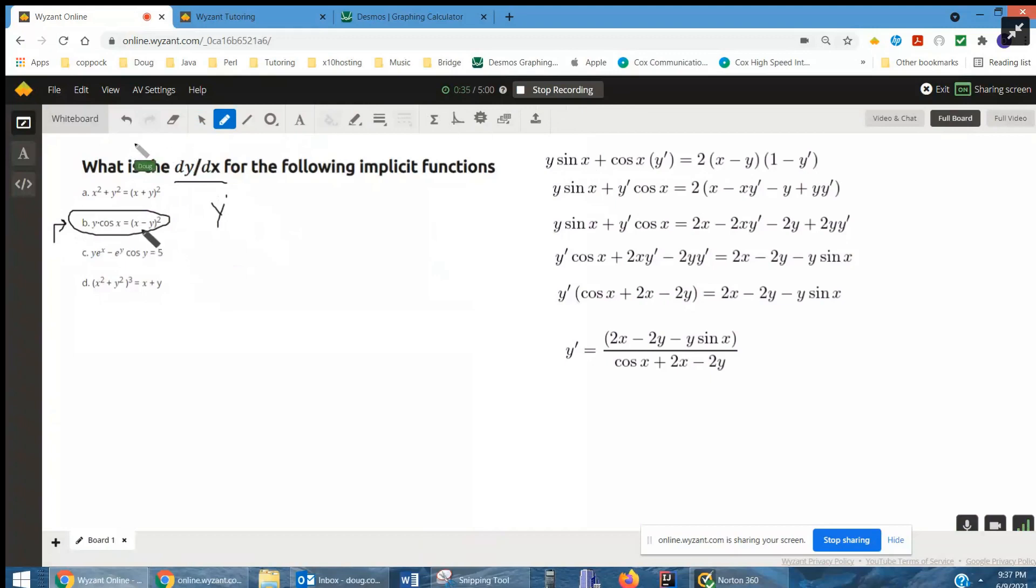And then on the right, power rule. Bring the 2 down, reduce the exponent by 1. The derivative of inside, with respect to x, the derivative of the x is a 1, minus the derivative of y with respect to x is y prime.